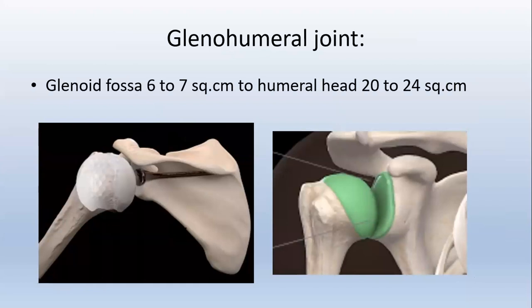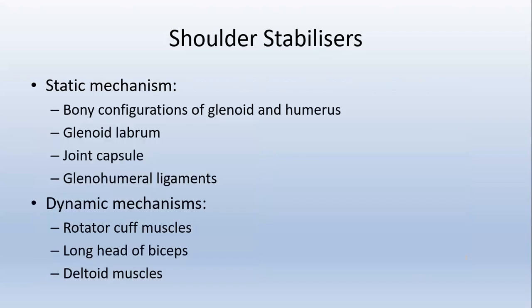The bony configuration of the glenohumeral joint shows a large mismatch between the surface contact area of the glenoid fossa and the humeral head. The glenoid fossa constitutes about 6 to 7 square centimeters and the humeral head is about 20 to 24 square centimeters. It is usually compared with a golf ball and tee configuration. Because of this, there is a good range of movements, but at the cost of stability.